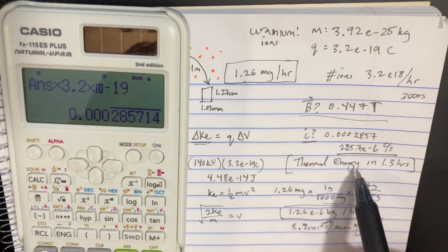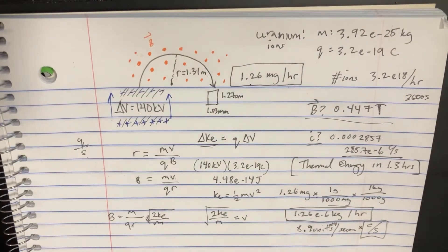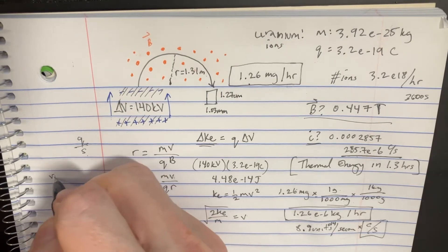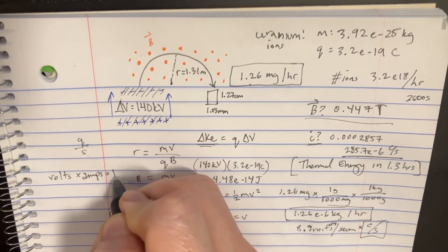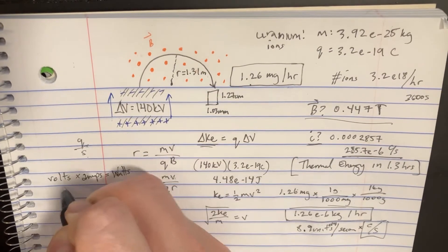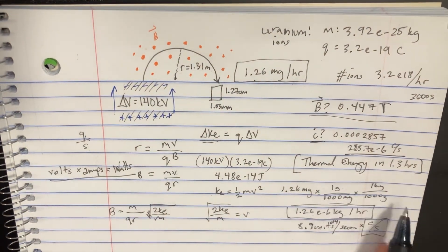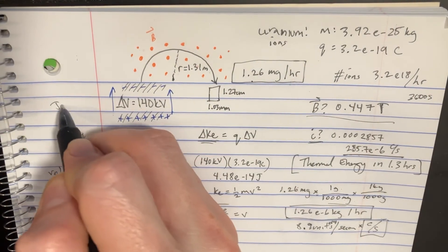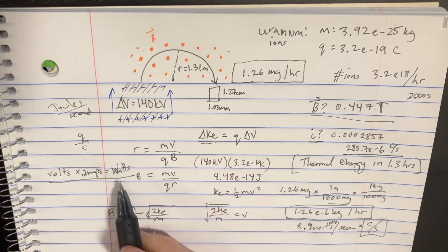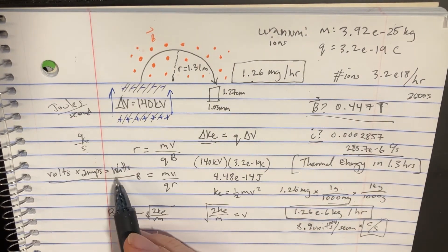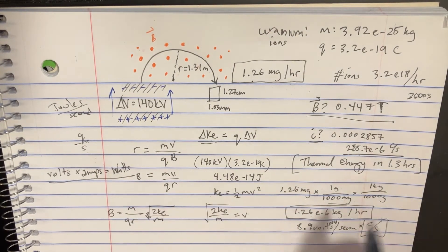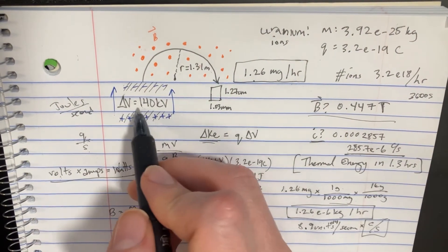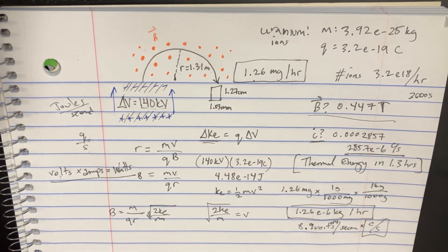Now for thermal energy in 1.3 hours so let's go back to our unit conversions. We have volts times amps equals watts. If we're trying to figure out thermal energy in 1.3 hours that's basically joules per second which is watts. So we got to figure out what our current was which is the amps and then the volts that we had.